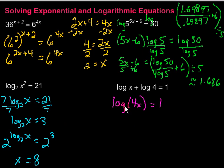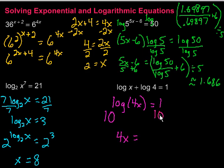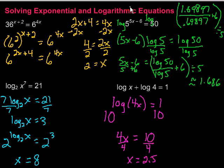Now I can do something similar to the last problem. When there's no base written, it's base 10. So I'll raise both sides with 10 as the base: 10 to this power on the left, and 10 to the first power on the right. The log and the 10 cancel, leaving just 4x equal to 10 to the first power, which is 10. Finally, divide by 4 to get x equals 5 over 2, or 2.5.